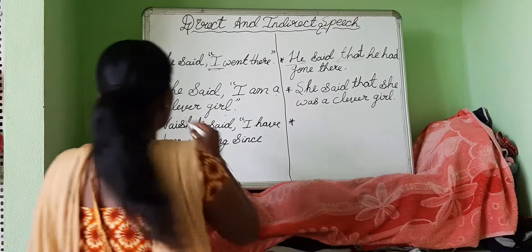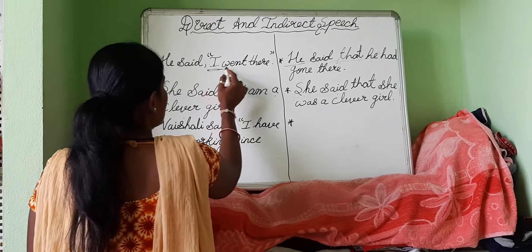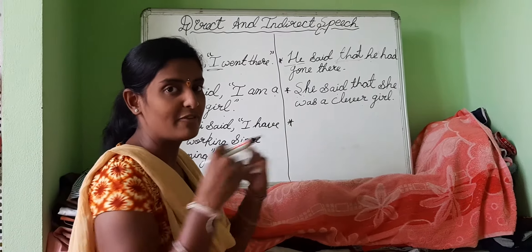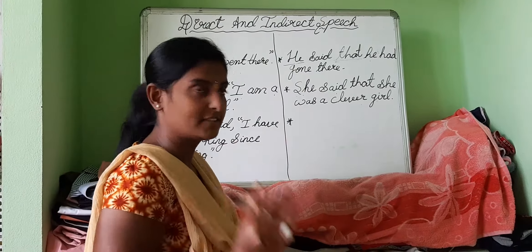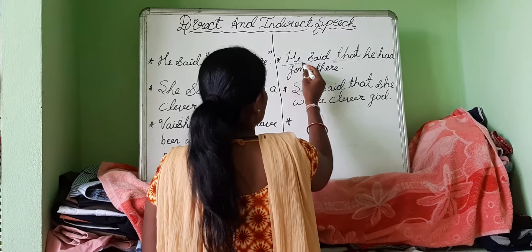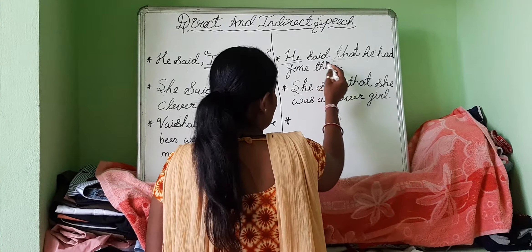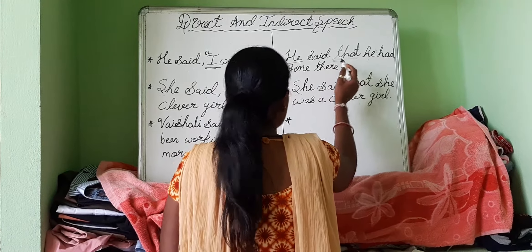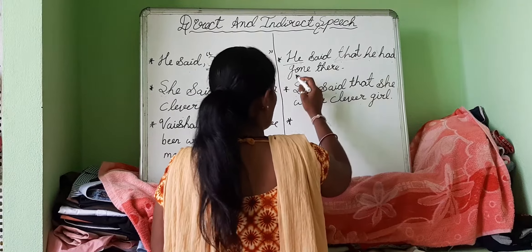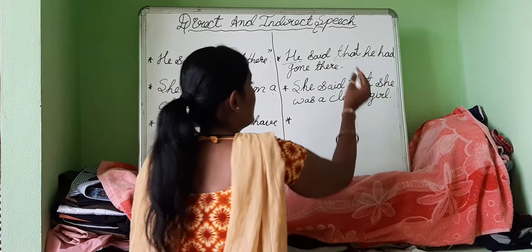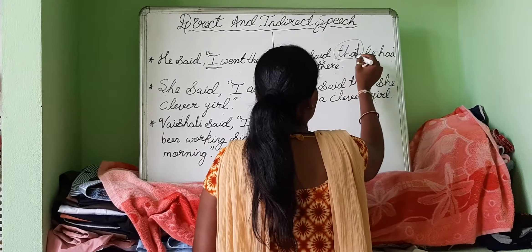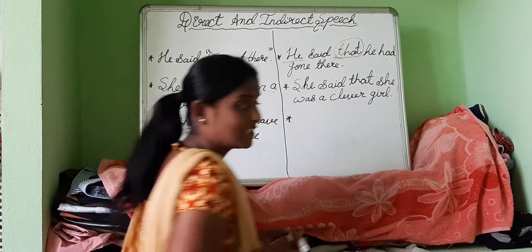For example, in direct speech: he said, I went there. But in indirect speech: he said that he had gone there. It means they are adding the word 'that' in indirect speech.